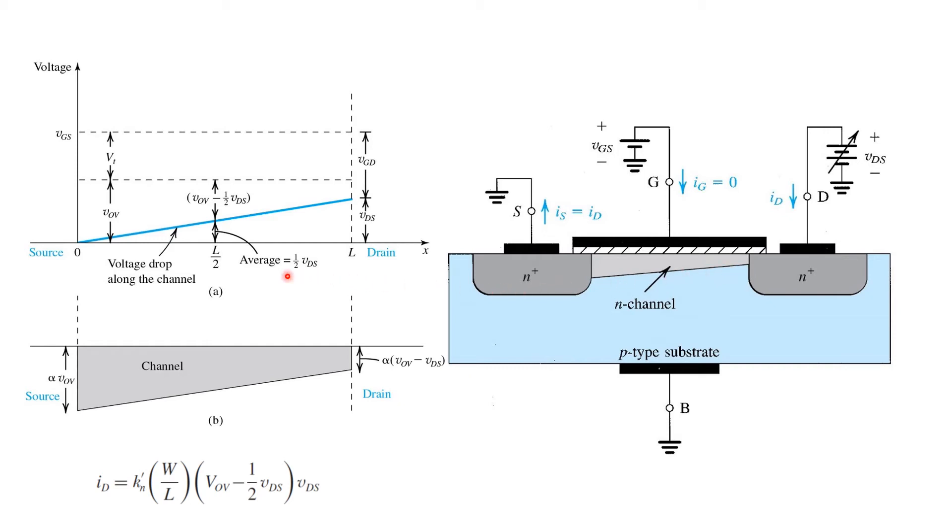It can be modeled pretty straightforwardly just by recognizing that the channel is wider at one end or has a larger amount of charge density at the source end than it does at the drain end. So we can simply consider it having an average inversion level that's equal to VOV minus half the value of VDS.